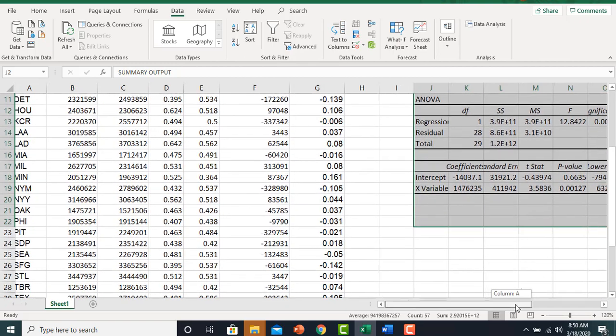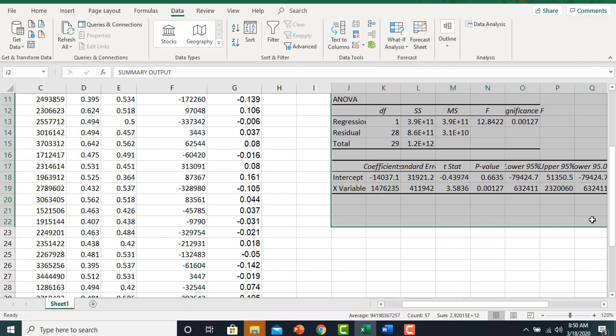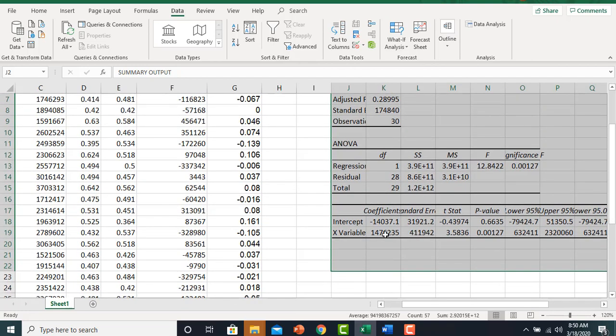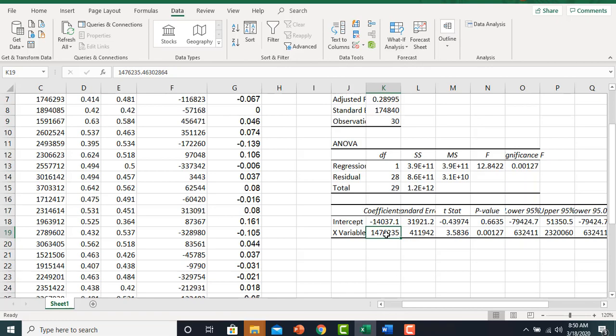The key thing we want to look at is the coefficient on the independent variable. And we can see first off it is statistically significant. And then the next thing we'll do is the interpretation. So what does a one percentage point increase in the winning percent over time do for a team's attendance?